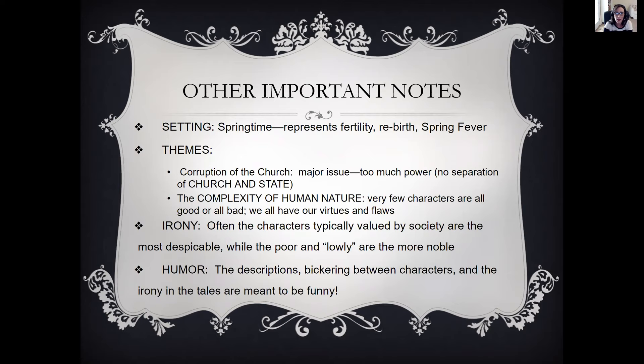The themes are the corruption of the church — and remember, he still respected Christianity and was a Christian himself, writing throughout about how important it is to follow Christ's example — but the church had too much power, there was no separation between church and state, and he saw that corruption as a real and growing problem. He also wrote about the complexity of human nature. Very few characters are all good or all bad. He included irony: often the characters typically valued by society are the most despicable, while the poor and lowly are the more noble. Tied into the irony is humor — the descriptions, bickering between characters, and irony in the tales are meant to be funny.